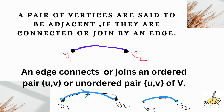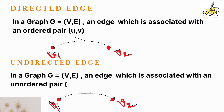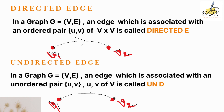An edge connects or joins an ordered pair U comma V, or an unordered pair of elements or nodes. A directed edge in a graph G is an edge which is associated with an ordered pair U comma V — that is, an element of V cross V, meaning the ordered pair belongs to the Cartesian product of the given set of vertices V. Such an edge is called a directed edge.